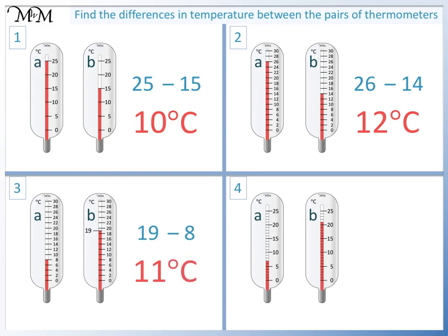Question 4. Thermometer B reads 21 degrees and thermometer A reads 7 degrees. 21 take away 7 equals 14, so the difference in temperature is 14 degrees C.